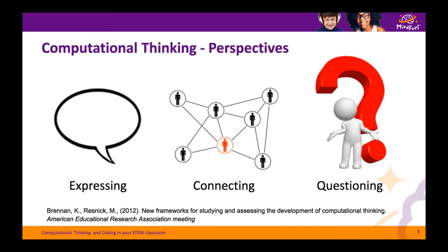Finally, Brennan and Resnick identified three perspectives used in computational thinking. Computational thinking can be used to express ourselves in different ways through different media. It can also help us to share our work with others and connect in new ways to people both online and offline. Finally, computational thinking can prompt us to ask questions about the digital world and our place within it.